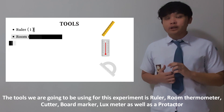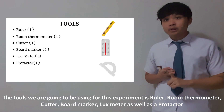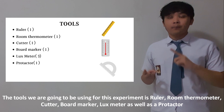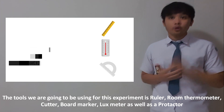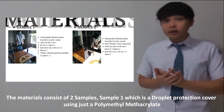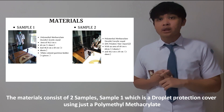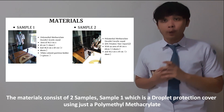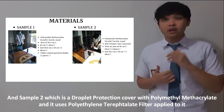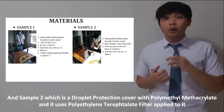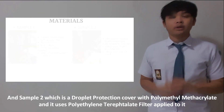The tools we are going to use for this experiment are a ruler, a room thermometer, a cutter, a board marker, a lux meter, as well as a protractor. The materials consist of two samples: Sample 1, which is a droplet protection cover using just polymethyl methacrylate, and Sample 2, which is a droplet protection cover with polymethyl methacrylate and a polyethylene terephthalate (PET) filter applied to it.